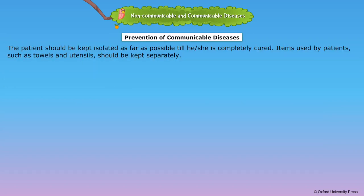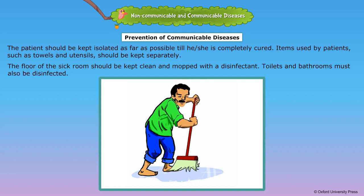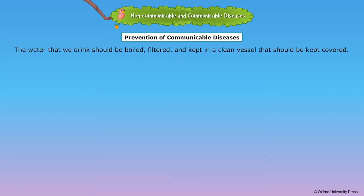Prevention of communicable diseases. The patient should be kept isolated as far as possible till he or she is completely cured. Items used by patients such as towels and utensils should be kept separately. The floor of the sick room should be kept clean and mopped with a disinfectant. Toilets and bathrooms must also be disinfected. The water that we drink should be boiled, filtered, and kept in a clean vessel that should be kept covered.